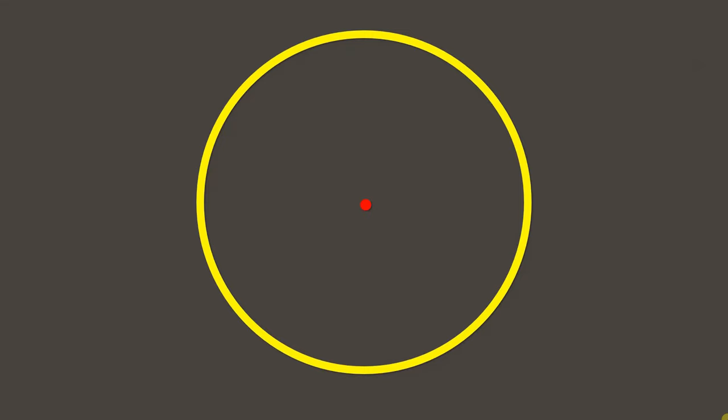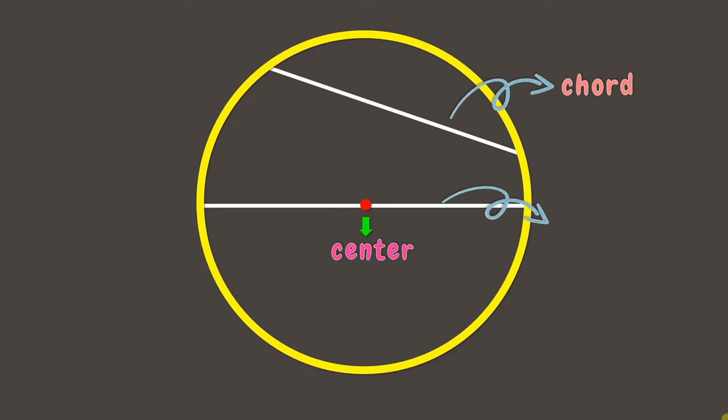Now, let's recall all the terms related to circle. First is the center. Next, a line whose endpoints lie on the circle is called chord. The chord that passes through the center is the diameter. Half of the diameter is called radius.